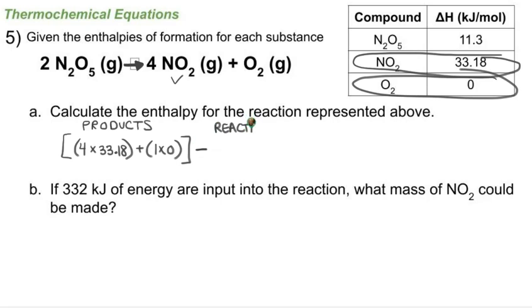Reactants. I just like to label things so you know what I'm doing here. And then I have two moles of my reactants, so two times the enthalpy of formation value for N₂O₅, which is 11.3 kilojoules per mole.